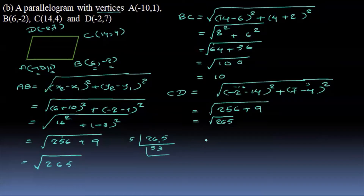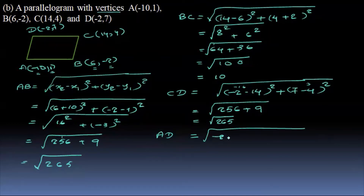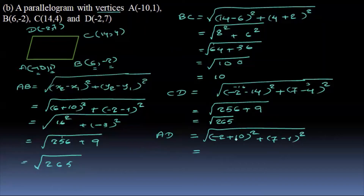For DA: the x-component is minus 2 minus minus 10, minus minus plus 10, the whole square. Plus y-component: 7 minus 1, the whole square. Equal to minus 2 plus 10, and 7 minus 1 gives values.